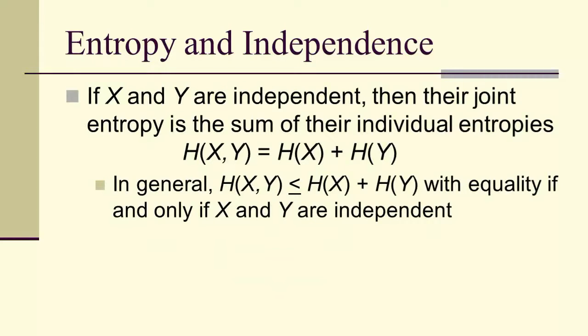...then their joint entropy is the sum of their individual entropies. In general, the sum of the individual entropies is only an upper bound. And this generalizes quickly, or easily, to more than two variables.